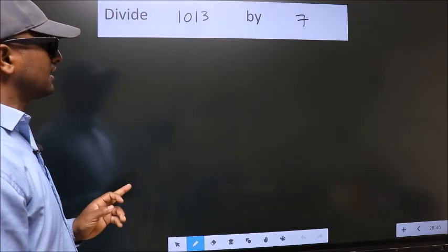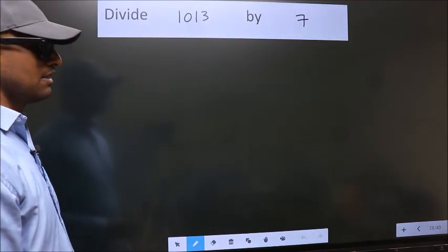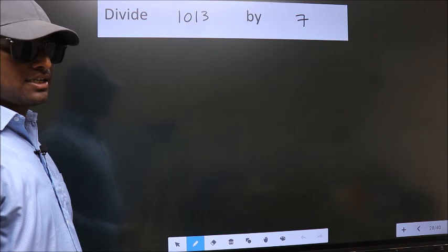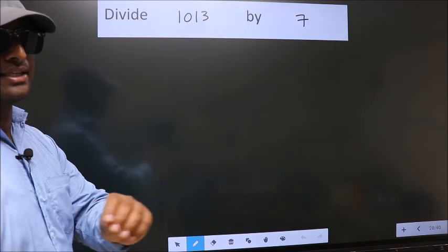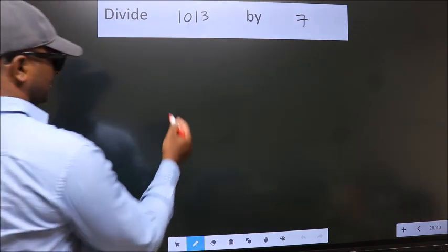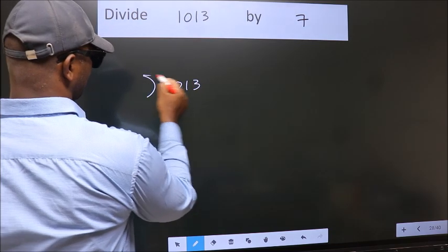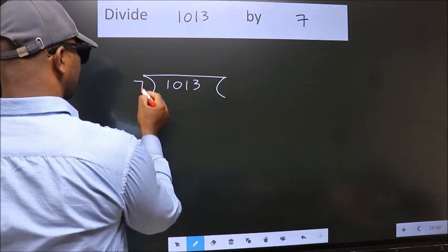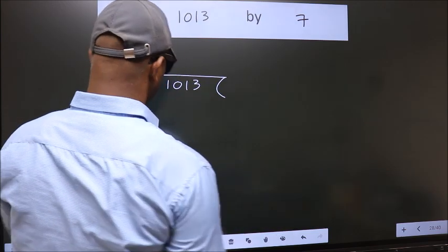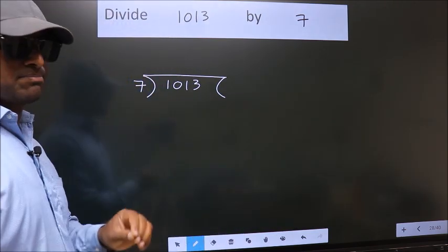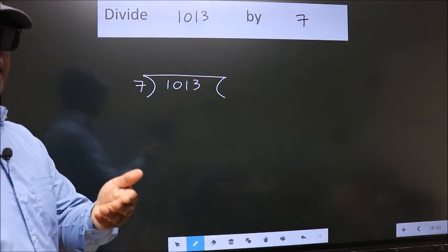Divide 1013 by 7. To do this division, we should frame it in this way. 1013 here, 7 here. This is your step 1. Next.